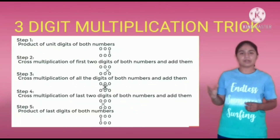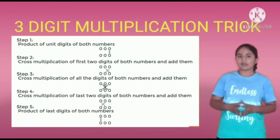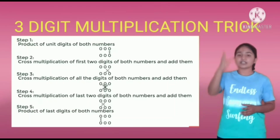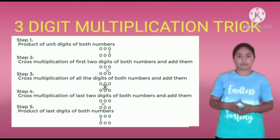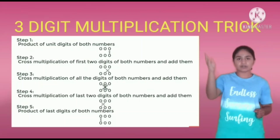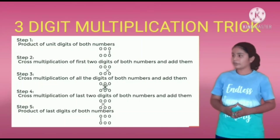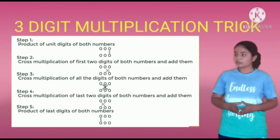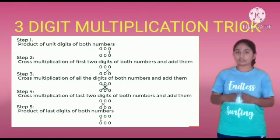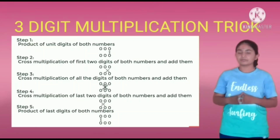Now let us learn the 3-digit multiplication trick. We will start with the steps. Step 1: Product of the unit digits of both numbers. Step 2: Cross multiplication of the unit digits of both numbers and add them. Step 3: Cross multiplication of all digits of both numbers and add them.